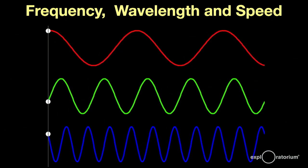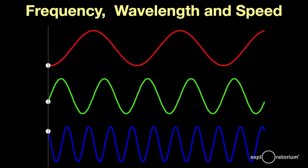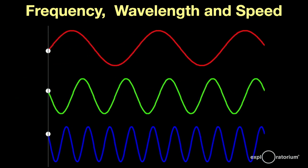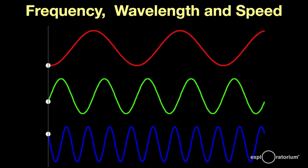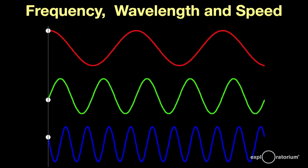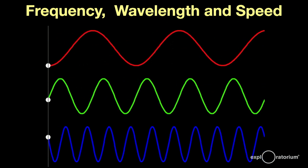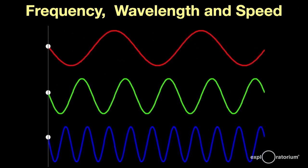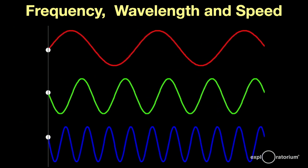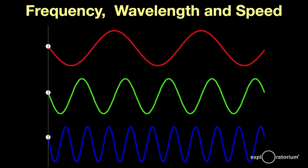All light waves travel at the same speed — the speed of light. That means that slower vibrating light, red, produces long wavelength waves, and faster vibrating light, blue and violet, produces shorter wavelength waves. There is a simple, direct, and proportional relationship between the frequency and the wavelength.